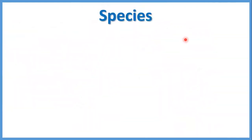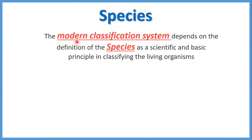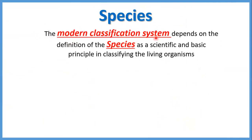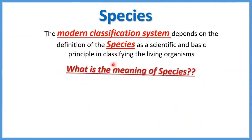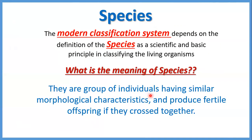Species هي الbuilding unit أو الsmallest level اللي موجود في series of taxonomy. الmodern classification system depends on the definition of the species. Species معناها: group of individuals بيبقى عندهم similar morphological characteristics and produce fertile offspring if they cross together.